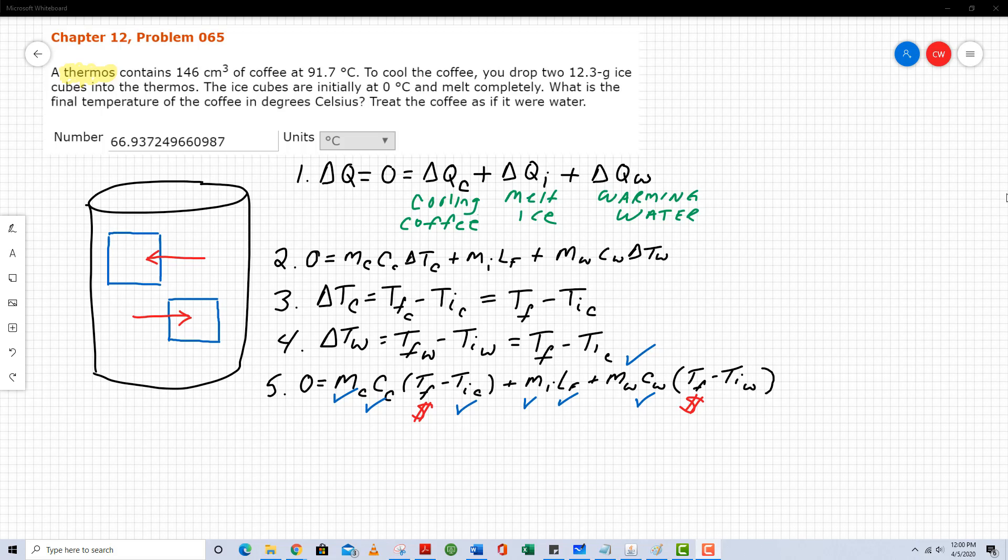Step number five develops this even further. There's my dollar sign variable, T subscript F. T subscript F is what I'm calling the final equilibrium temperature of the coffee and the final equilibrium temperature of the water. They will have the same value. Everything else in step five is known. I'm given the mass of the coffee. I'm treating coffee as if it were water so I know the specific heat capacity of water. I know the coffee's initial temperature. I know the mass of the ice cubes.